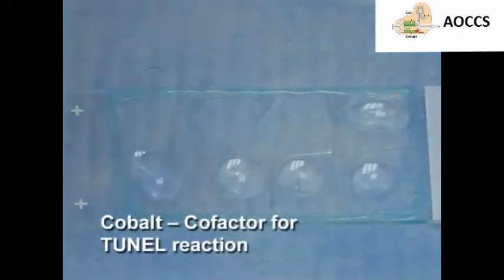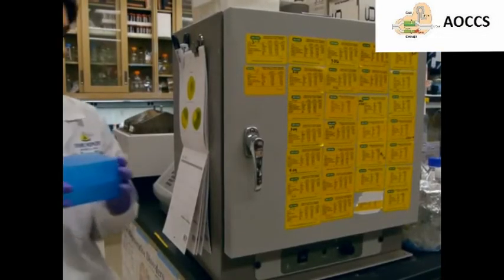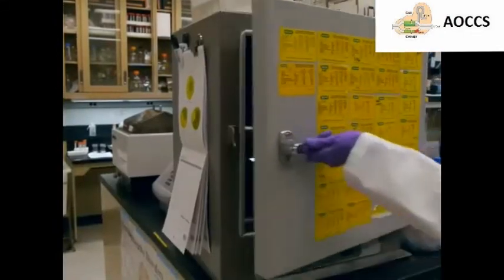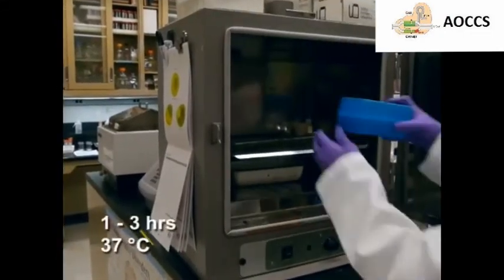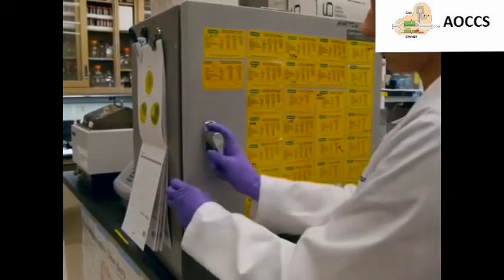Following permeabilization, the TdT enzyme and fluorescently labeled dUTPs are added to the tissue sections along with a labeling buffer containing cobalt that acts as a cofactor for the TUNEL reaction. Together, the TUNEL reaction mixture and the tissue section are incubated for 1 to 3 hours at 37°C and protected from light to prevent the fluorescence from fading.